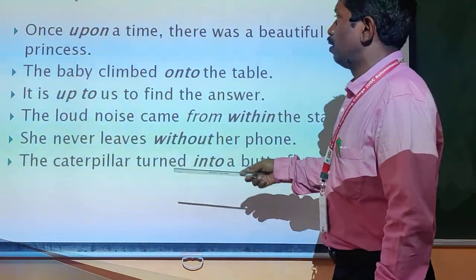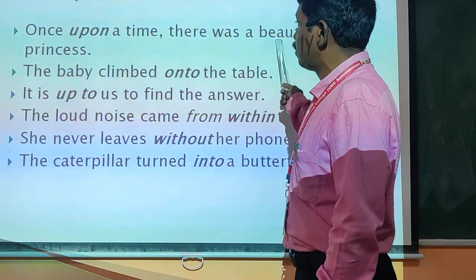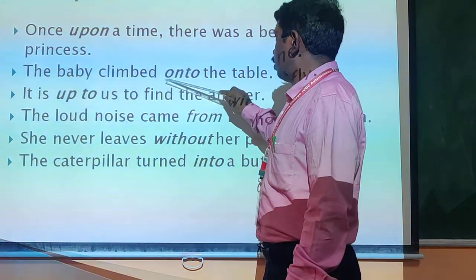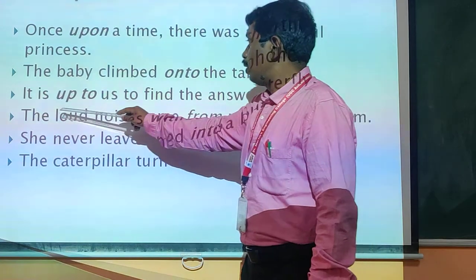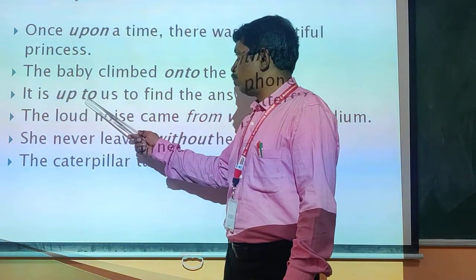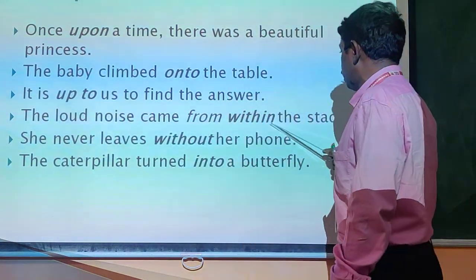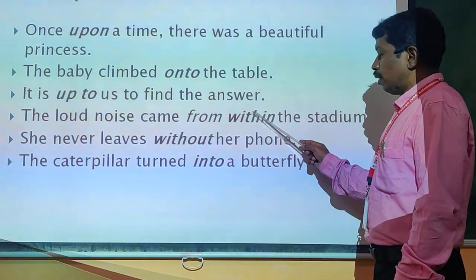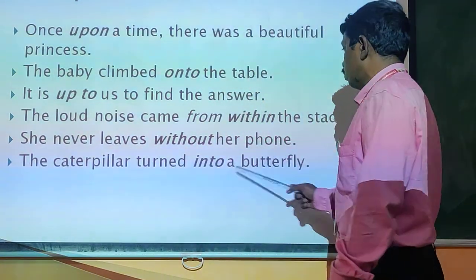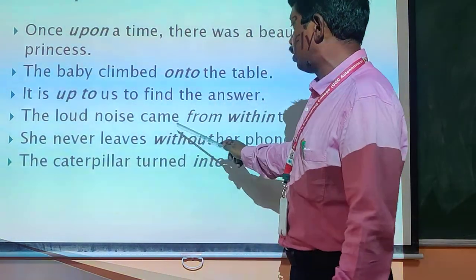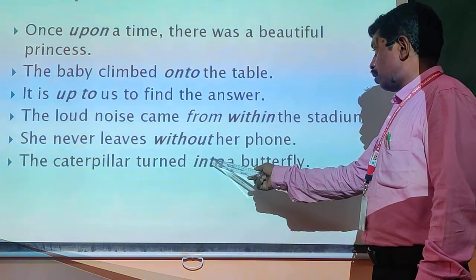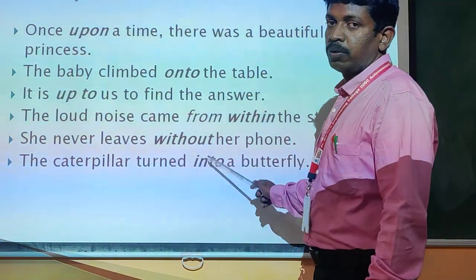Examples of double prepositions: Once upon a time, there was a beautiful prince — 'upon' is a double preposition (up + on). The baby climbed onto — 'onto' is on + to. It is up to us to find the answer — 'up to' (up + to). The loud noise came from within the stadium — 'within' (with + in). She never lives without her food — 'without' (with + out). The caterpillar turned into a butterfly — 'into' (in + to). These are double prepositions.